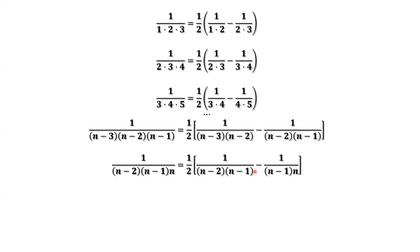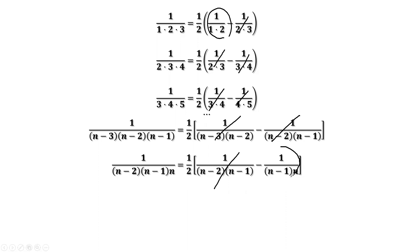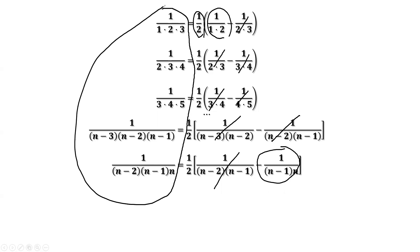Now, if we add up all of those equations, we observe that terms cancel in a telescoping pattern: this and this cancels, this and this cancels, this and this cancels, and so on down the list. The only terms remaining on the right-hand side are the very first term and the very last term including its minus sign, and the constant outside, which is one half. The sum of the left-hand side is the expression we want to calculate.